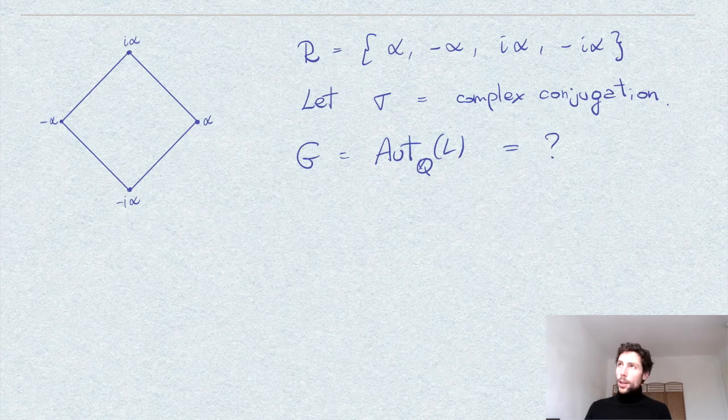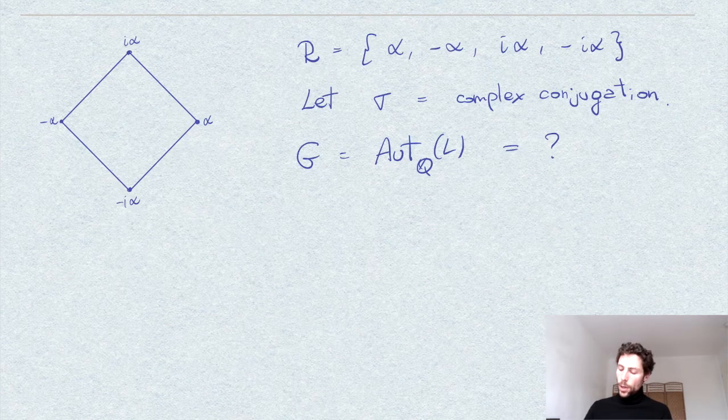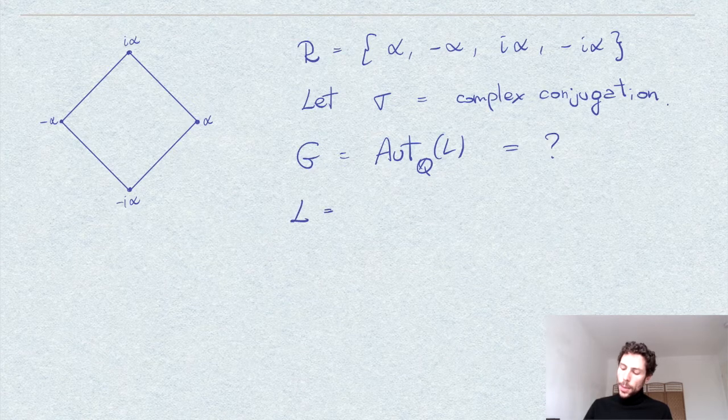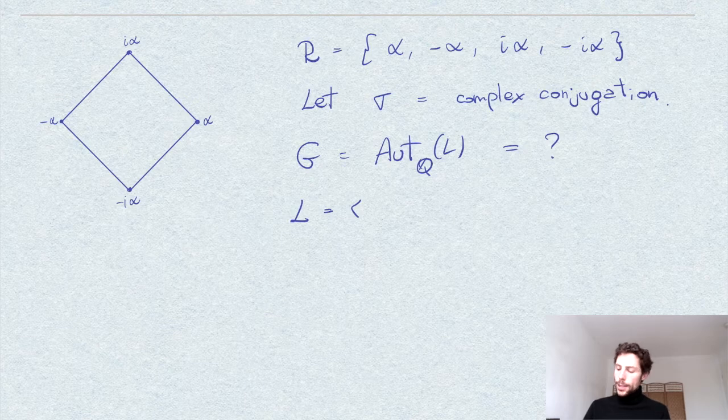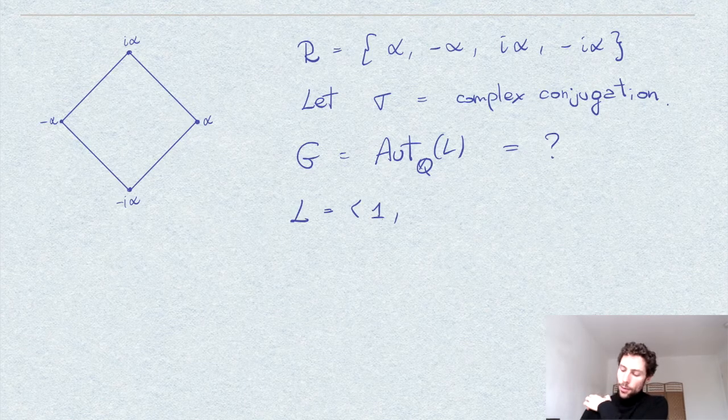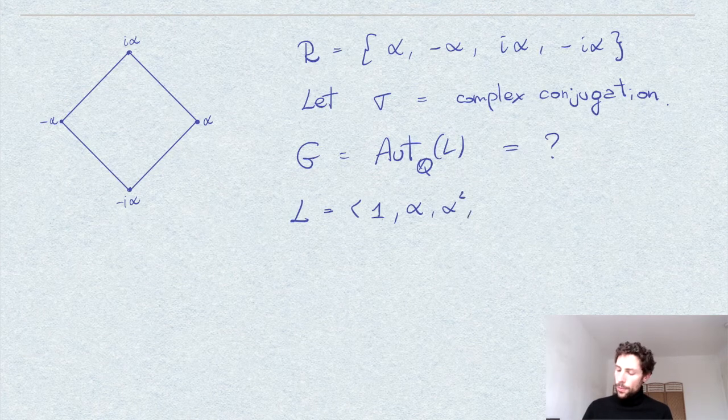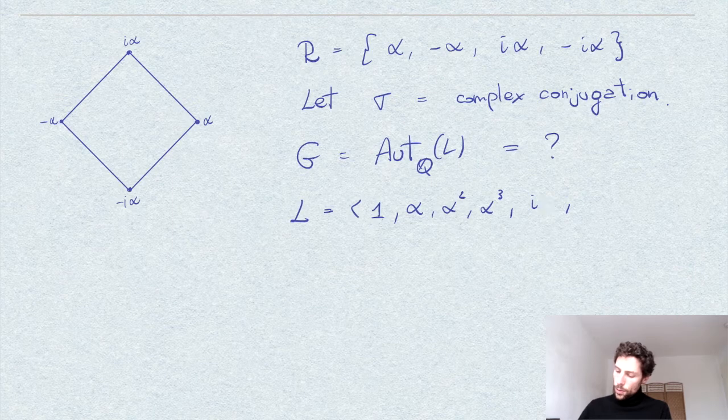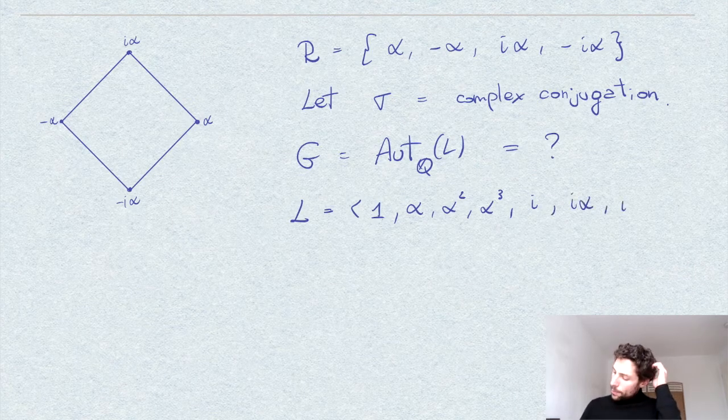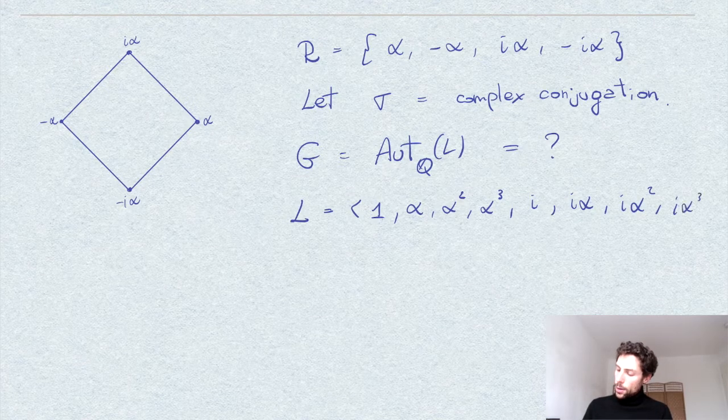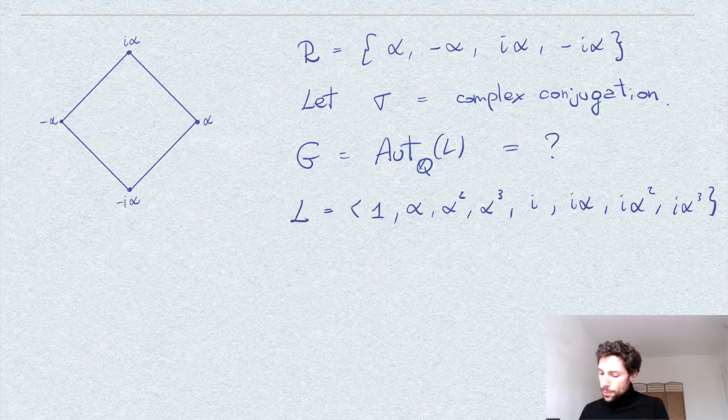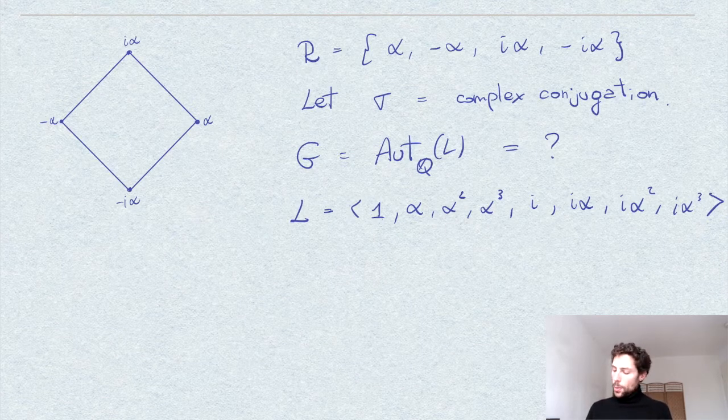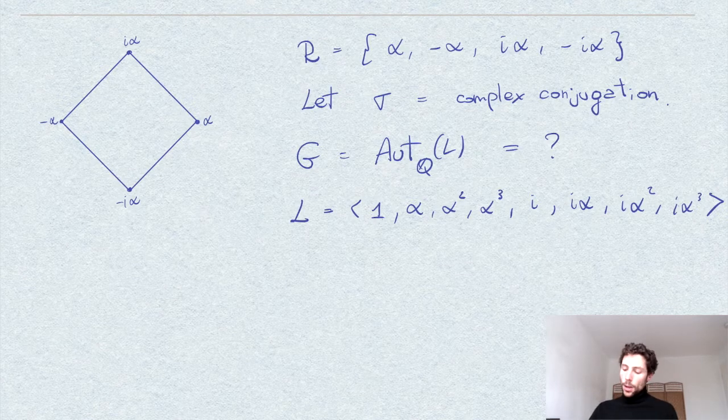So to start with, we can observe that the extension L, we can work it out as, for example, as I did in other videos, similar exercises. We can work out the basis of L and find out that it is an extension of degree 8. And a basis is given, for example, by these powers of alpha and then i, i alpha, i alpha cubed. So in particular, it's an extension of degree 8. So this would be a basis over Q as a Q vector space.